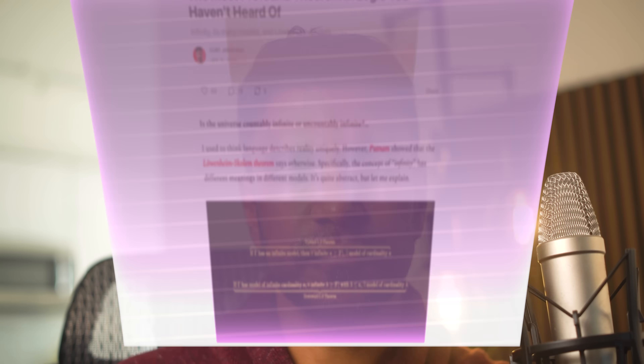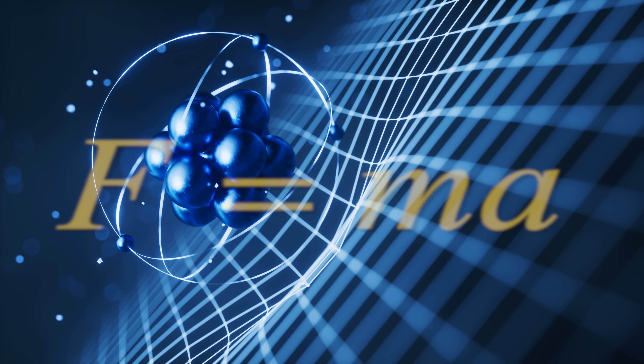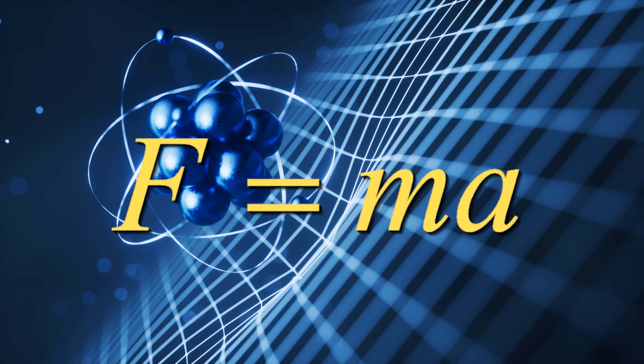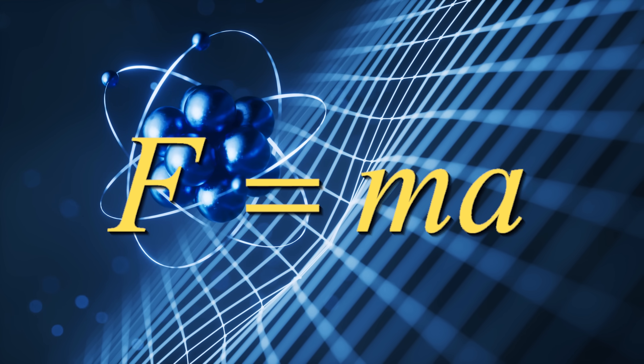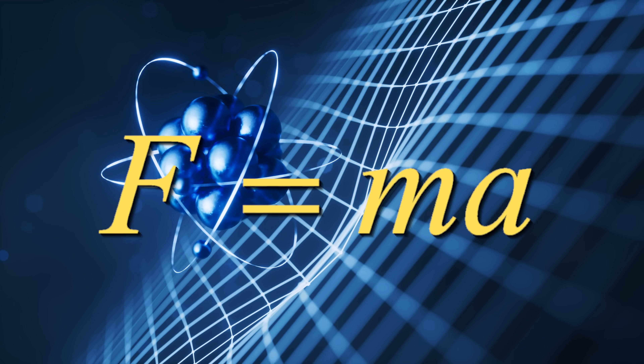To me, the real philosophical meat is in what do we mean by 'law.' When physicists say 'law,' they usually mean something like F = ma, and there are more complicated versions of this. But philosophers have been sharpening their knives on this for decades.